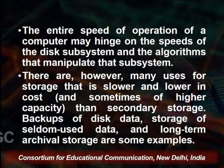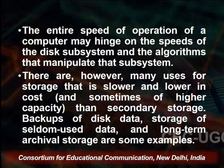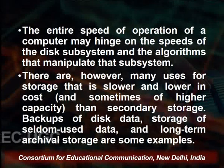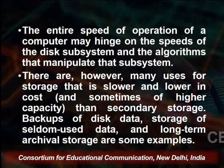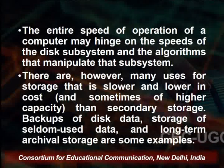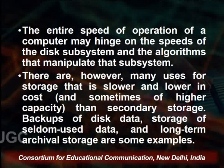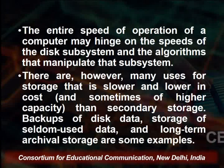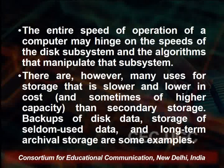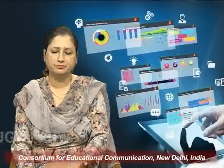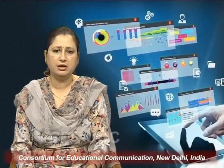The entire speed of a computer's operation hinges on the speed of the disk subsystem and the algorithms which manipulate it. Besides secondary storage (disk), there is also tertiary storage, which is slower and lower in cost but stores much larger amounts of data. Tertiary storage such as backup disks can be used for archival data or long-term storage. Tapes, removable disks, magnetic tape drives, and CD drives are used for this purpose.